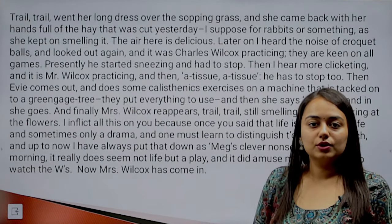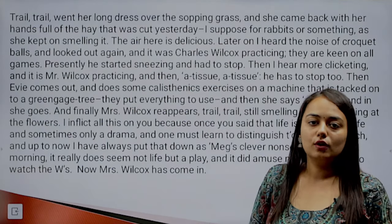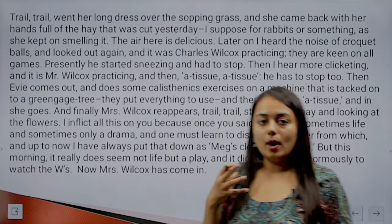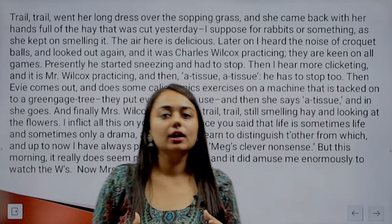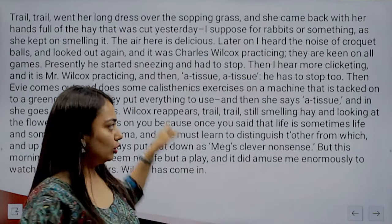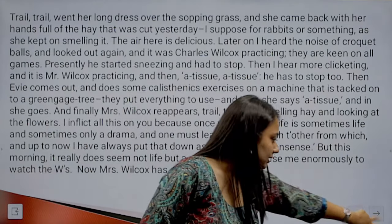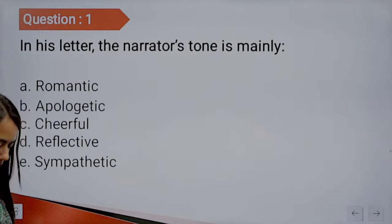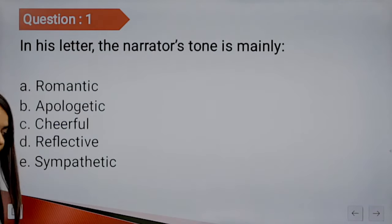This short excerpt is taken from 'Howards End' by E.M. Forster — a very famous novel by a very famous writer. 'Howards End' is the name of the estate of the Wilcox family. That is where this excerpt was taken from. Now let us look at some questions related to it.